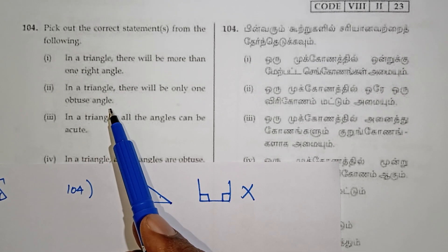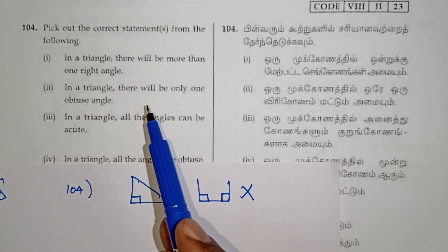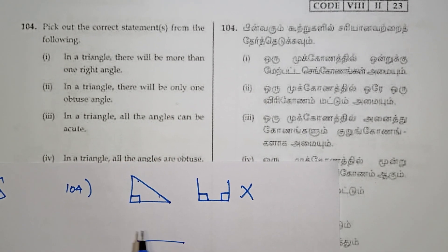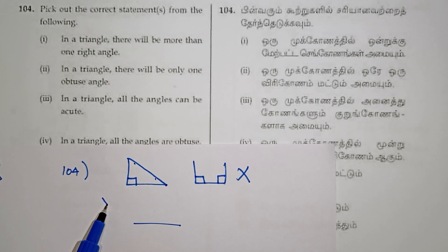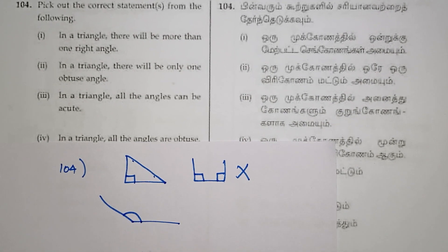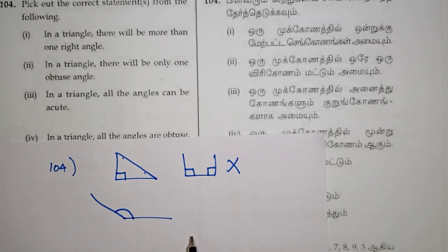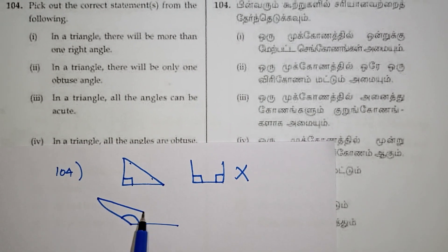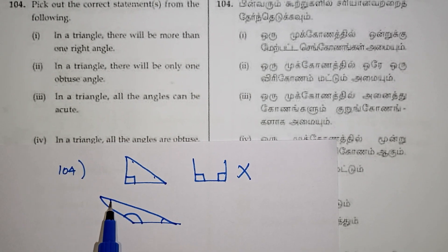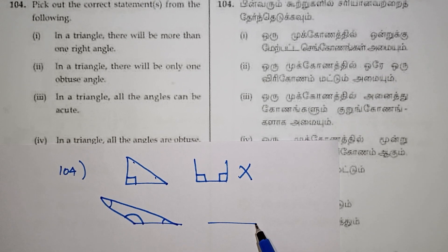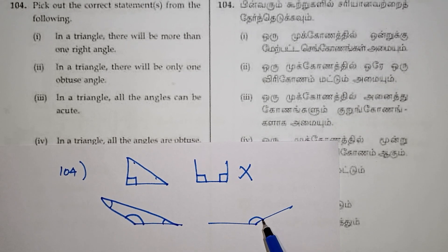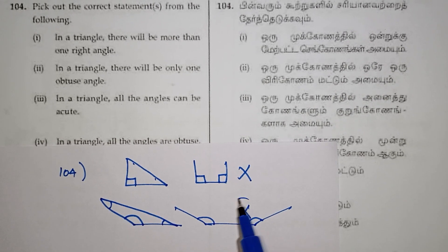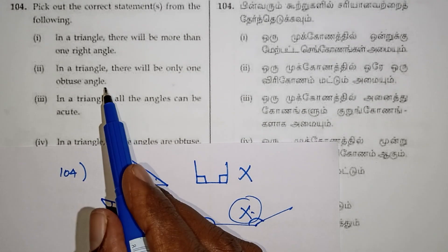Second statement: there will be only one obtuse angle in a triangle. An obtuse angle is more than 90 degrees. If one obtuse angle is present, the remaining two angles must be less than 90 degrees. So only one obtuse angle is possible in a triangle. This is true.